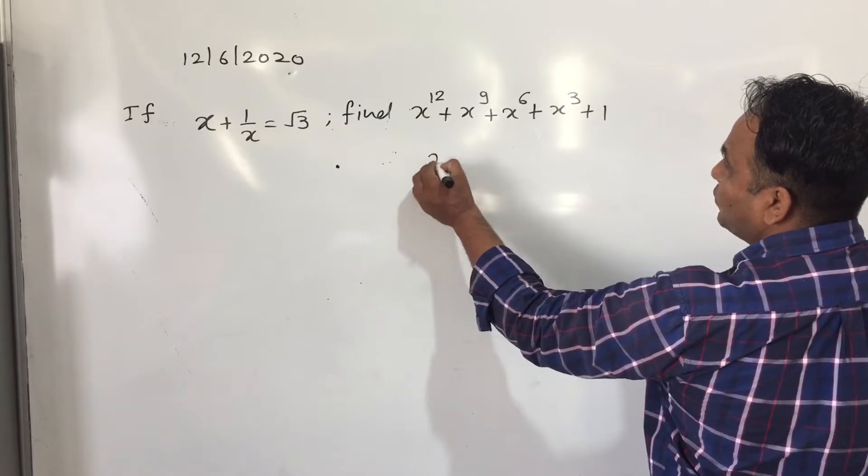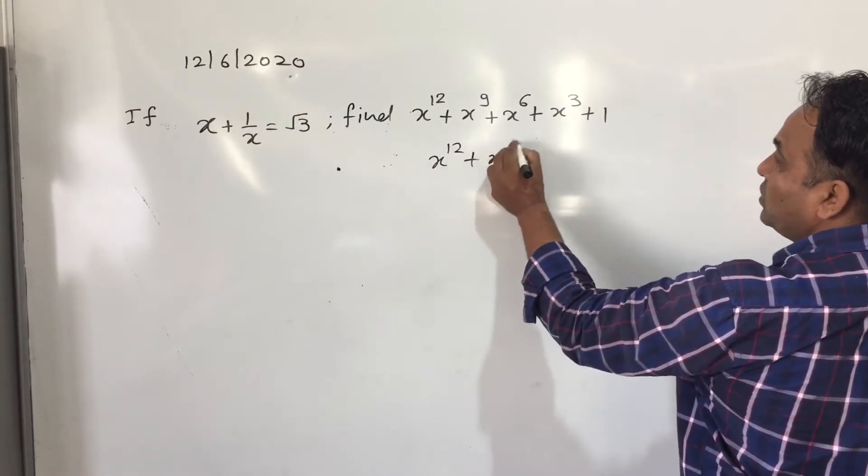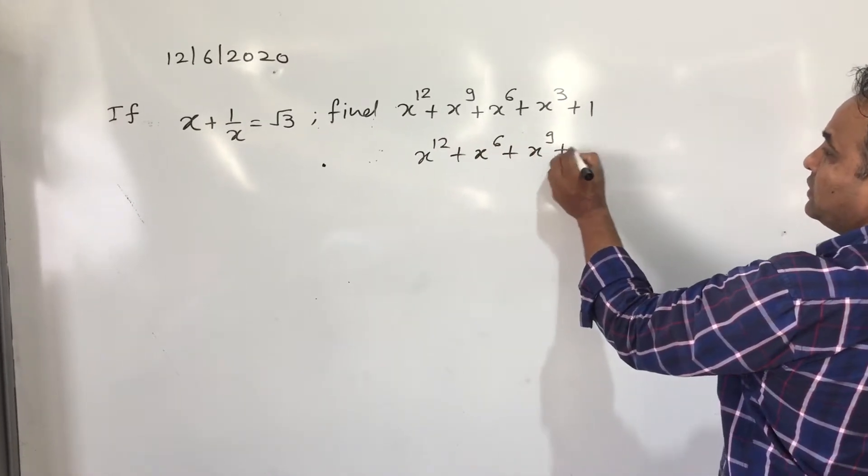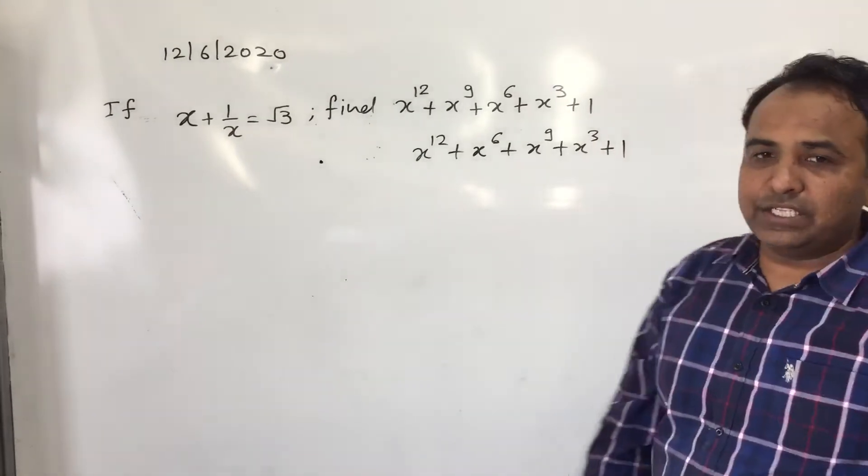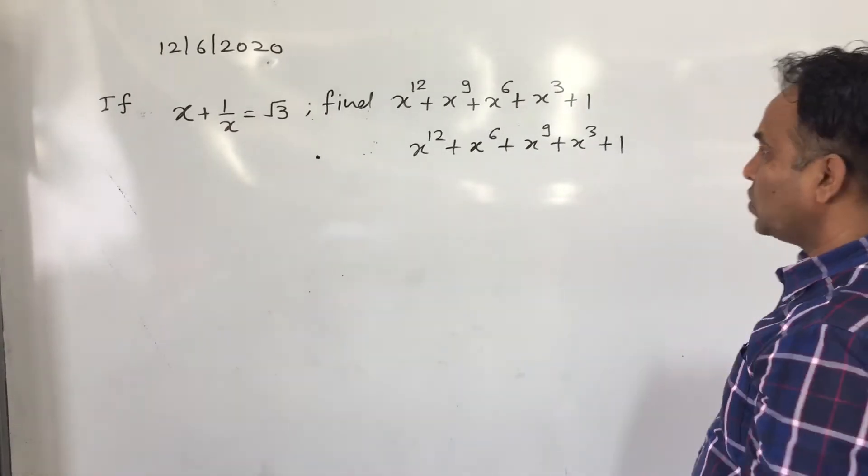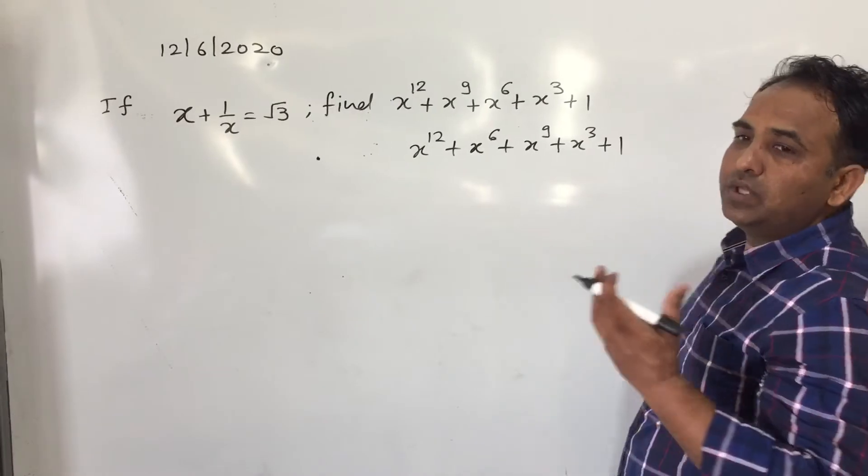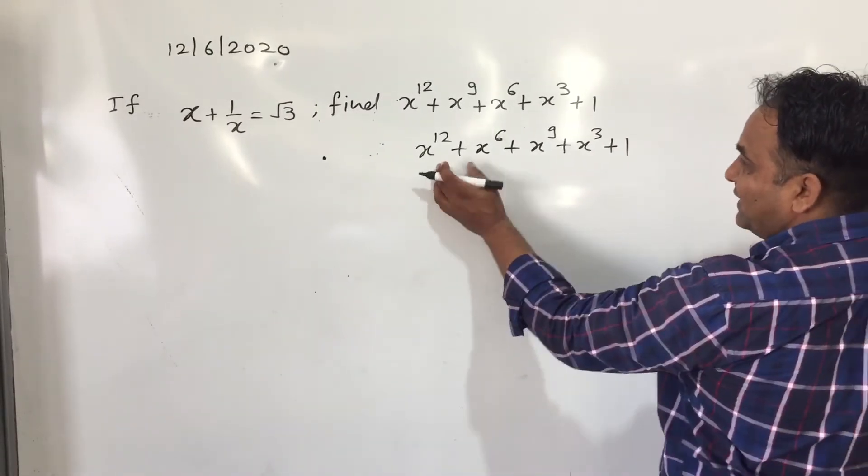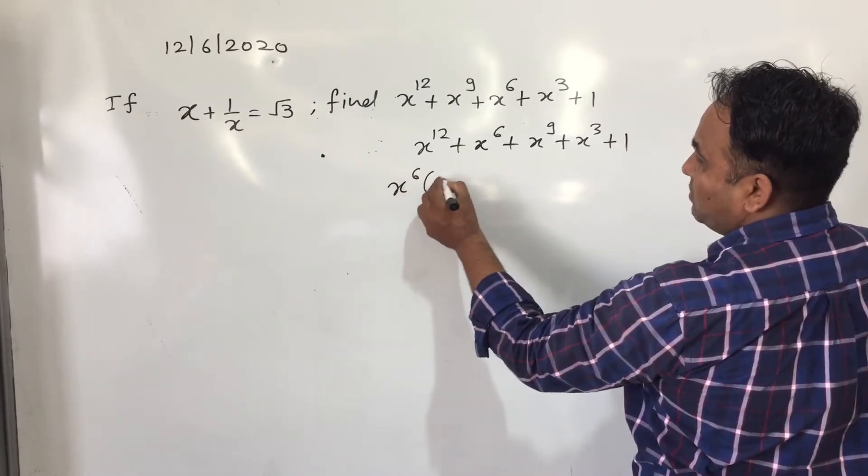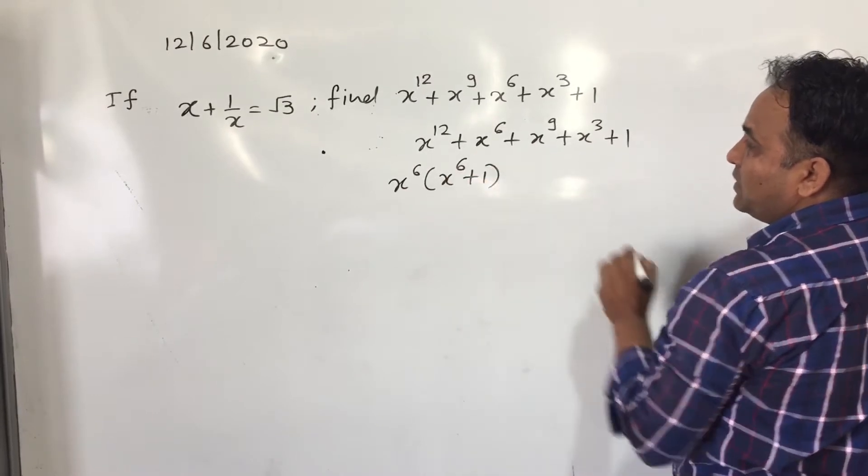Now what I am going to do, I am taking them together. This is just reshuffling of the terms as we know that addition is commutative. Why I do so? In order to do the factorization. Now if I take x^6 common, I will get x^6 + 1.